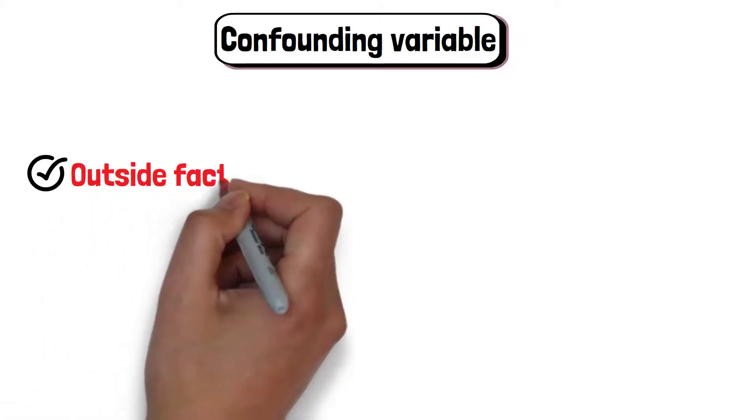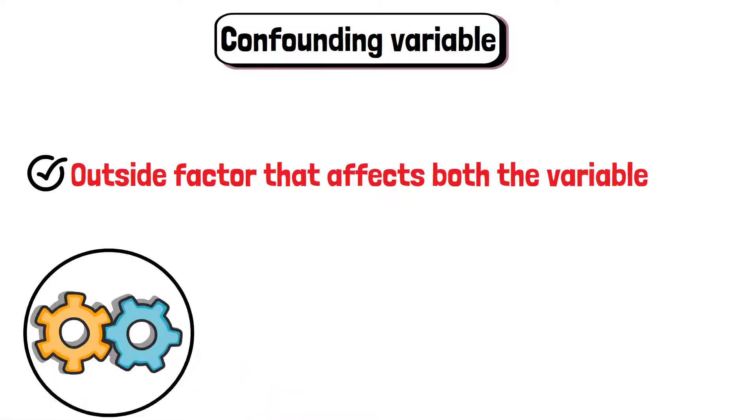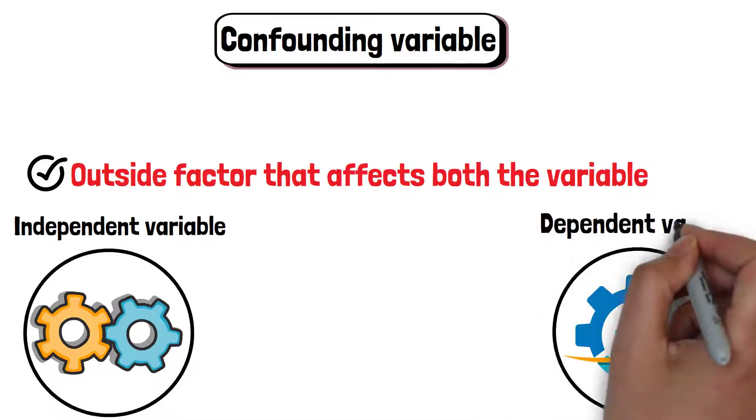A confounding variable is an outside factor that affects both the variable that's being changed or controlled, known as the independent variable, and the variable being measured, known as the dependent variable.